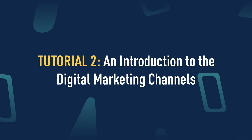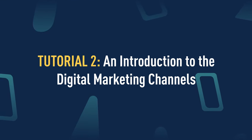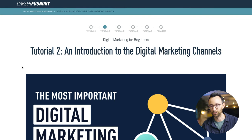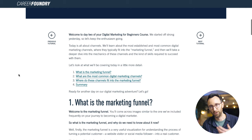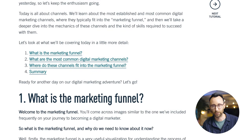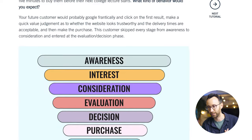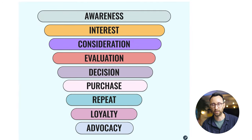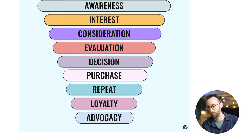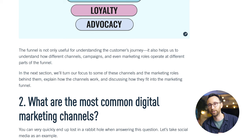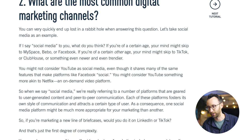If it sounds good, let's move on to tutorial two. This is all about an introduction to the various different digital marketing channels. The tutorial actually starts with one of the basic principles of marketing: the marketing funnel. This is the idea that when you run a campaign, you're trying to build awareness at the top of the funnel — reaching a lot of people so they know about and remember your product — and then as you work your way down the funnel, you're closer and closer to that purchase moment. All the digital marketing channels typically play a different role at each part of this funnel.